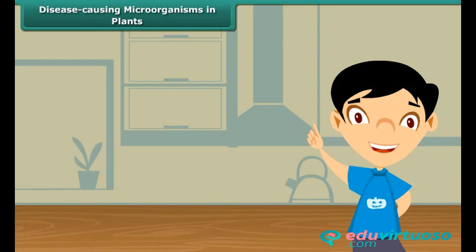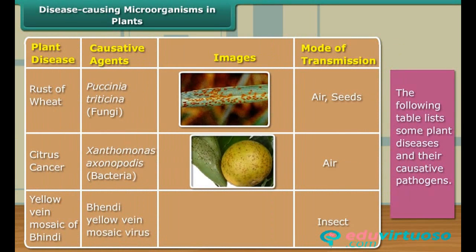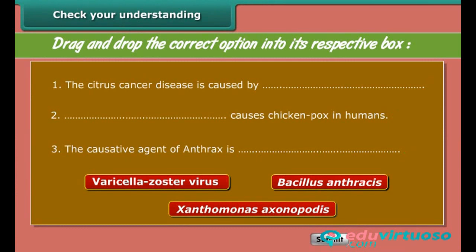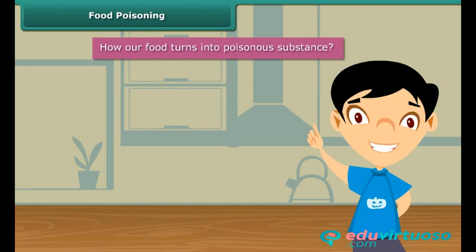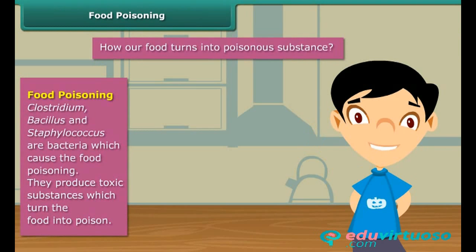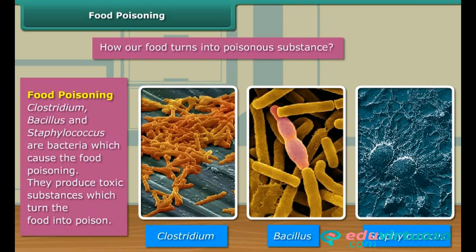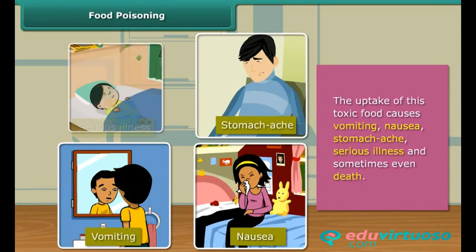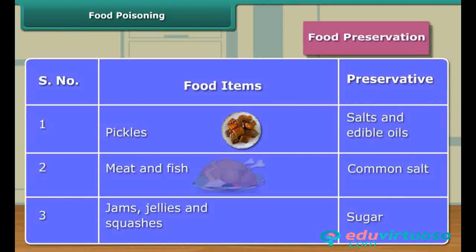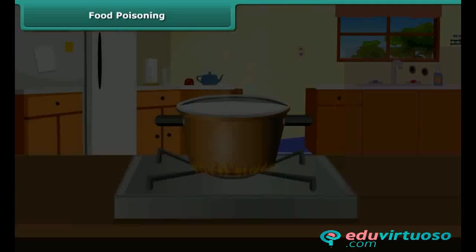Now let's know about diseases caused in plants. There are several microorganisms which cause disease in various plants. The table contains some widespread plant diseases and their causative pathogens. In summer season, if food is lying in the open for a longer duration, the food turns stale and finally becomes a poisonous substance. The cause of this is again the same — bacteria. There are some bacteria like Clostridium, Bacillus and Staphylococcus which cause food poisoning. We can preserve our food by some methods as listed. We use the pasteurization process to preserve milk.